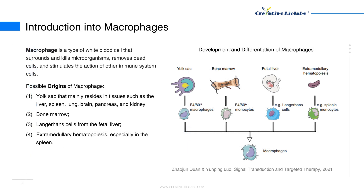A macrophage is a type of white blood cell that surrounds and kills microorganisms, removes dead cells, and stimulates the action of other immune system cells.